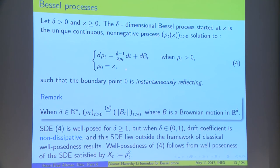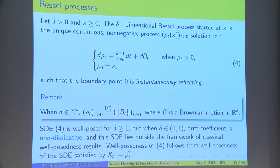We require that the point zero is instantaneously reflecting. So, it turns out that there is a unique, for all δ, which is positive, there is a unique solution to this equation, which is a δ dimensional Bessel process. A remark is that, if δ is an integer, this process has the same law as the Euclidean norm of a δ dimensional Brownian motion.